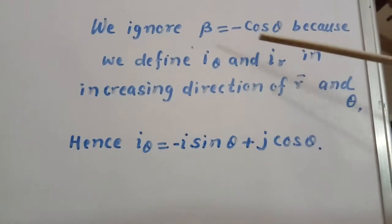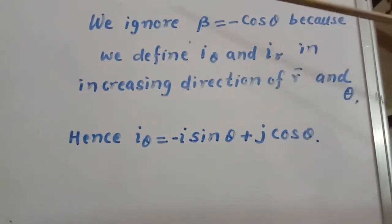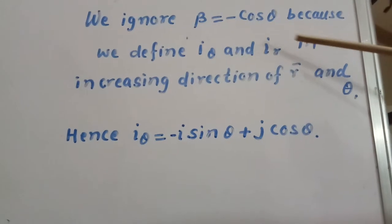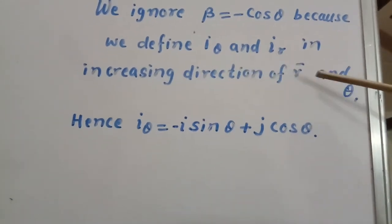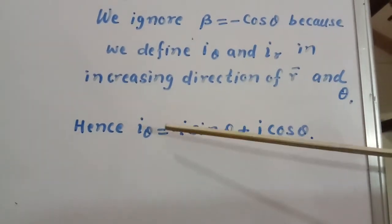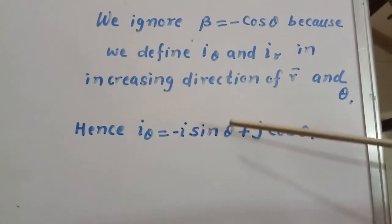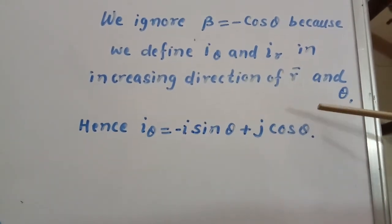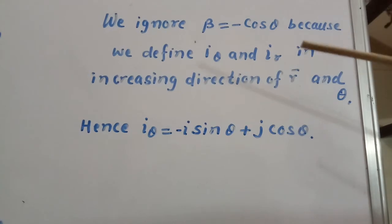We ignore beta equal to minus cos theta because we define i_theta and i_r in increasing direction of R and theta. Hence, i_theta equals minus i sin theta plus j cos theta, which is our answer. Thank you.